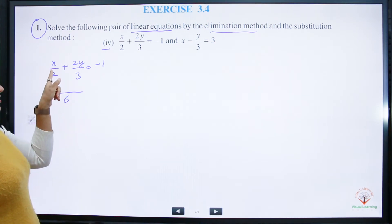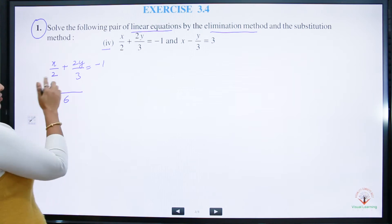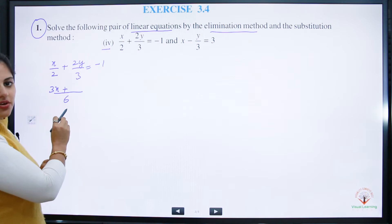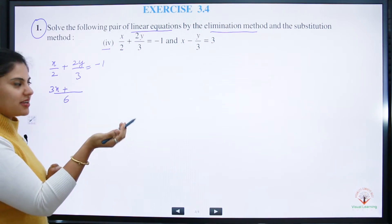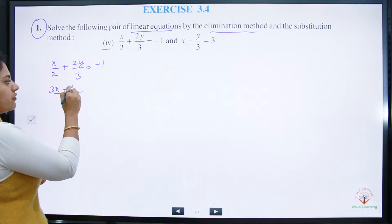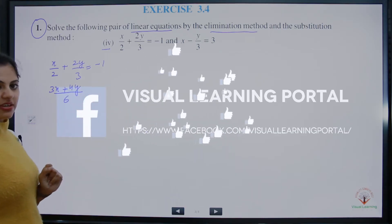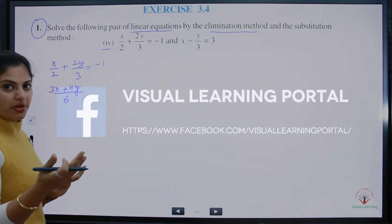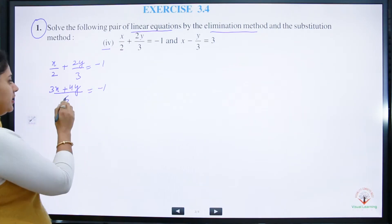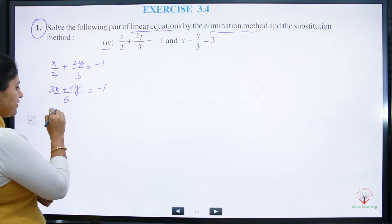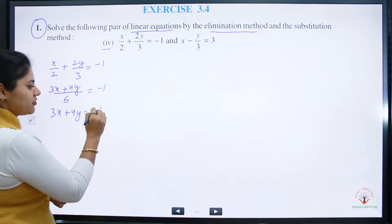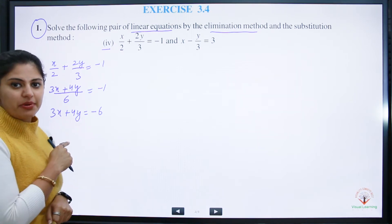We multiply: for the first term, 3 into x gives 3x; for the second term, 3 into 2 is 6 in the denominator, and 2 into 2 is 4y in the numerator. Taking the LCM of 6, multiply minus 1 by 6 to get minus 6 on the right side. So the rearranged equation becomes 3x plus 4y is equal to minus 6.